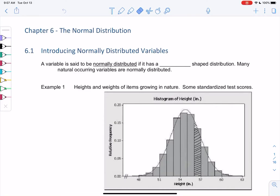Chapter 6, the normal distribution. We'll start with section 6.1, introducing normally distributed variables. A variable is said to be normally distributed if it has a bell-shaped distribution. Many naturally occurring variables are normally distributed, and we'll use this for continuous data.